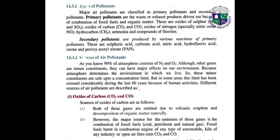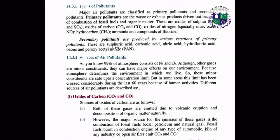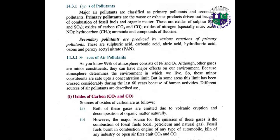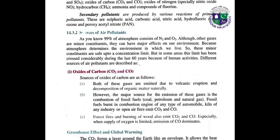What are the types of pollutants? Major air pollutants include primary pollutants, which are the waste or exhaust products driven out because of combustion of fossil fuels and organic matter. These include SO2, SO3, oxides of carbon (CO2, CO), and oxides of nitrogen. Secondary pollutants are produced by various reactions of primary pollutants. Examples include sulfuric acid, carbonic acid, nitric acid, and hydrofluoric acid.